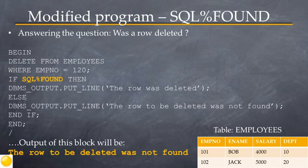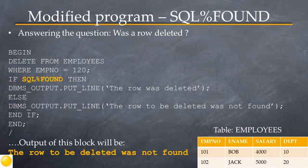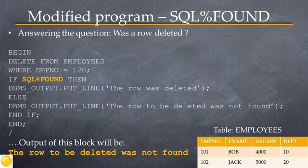If the row to be deleted is found in the table, this will display the string 'The row was deleted.' SQL%FOUND will become false if the row to be deleted is not found in the table, resulting in the ELSE part of the IF statement executing and displaying 'The row to be deleted was not found.' Looking at the employees table on this slide, the row with employee number 120 does not exist, so executing this block would output 'The row to be deleted was not found.'